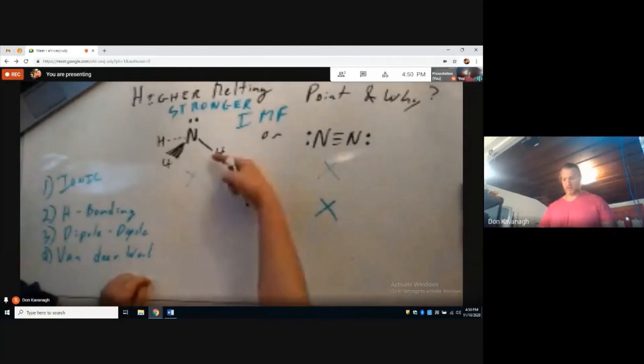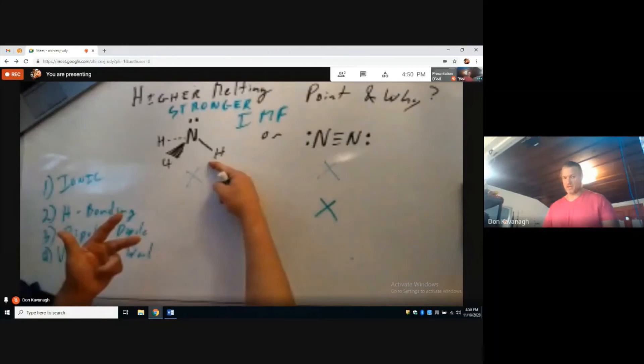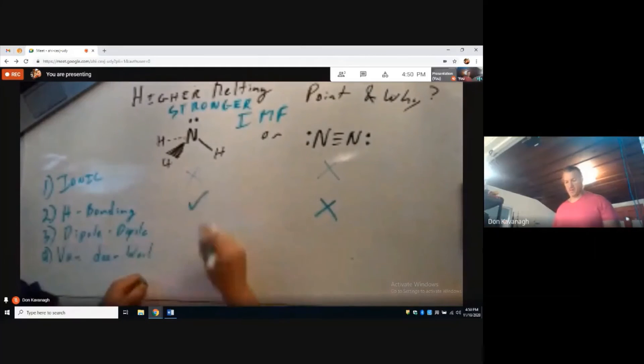This molecule here, ammonia, has a hydrogen present—check. Its hydrogen is bound to a nitrogen, oxygen, or fluorine—check. It has a lone pair—check. So because it has checks on all three, it can participate in hydrogen bonding.